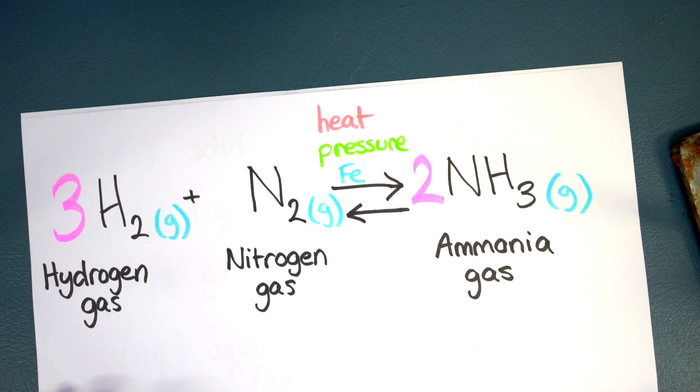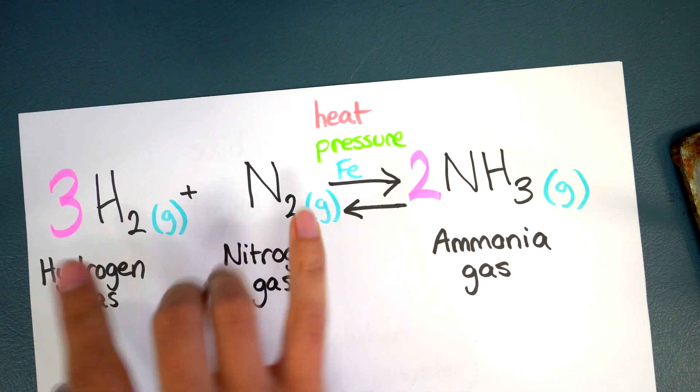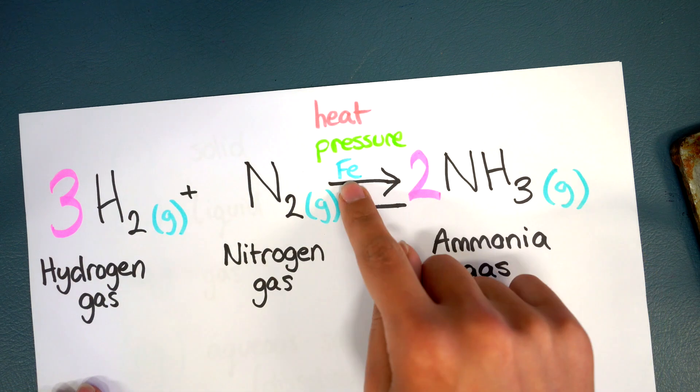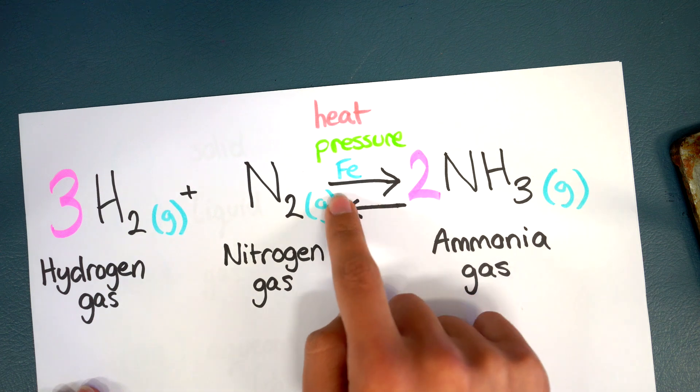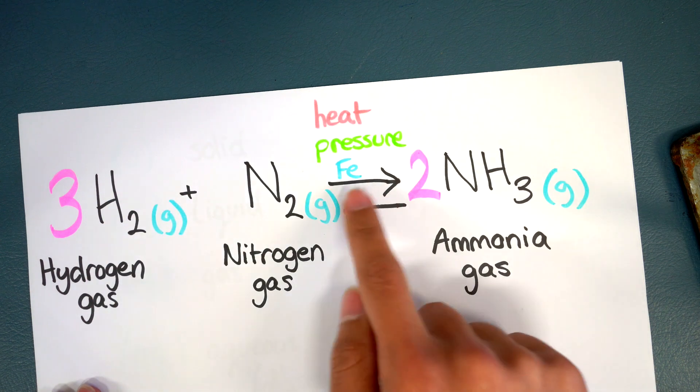Just in the same way that we stated that the pancake recipe will only work if you put in the frying pan, this reaction will require you to have a high temperature, a high pressure and a little bit of a helper. Now this here is a symbol for iron. Iron in this case is a catalyst and this helps this reaction go forward in this direction.